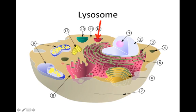Next is the lysosome. Sometimes the lysosome is called the stomach of the cell, because that's where large molecules — often large carbohydrates — are broken down into smaller molecules that the cell can then use.